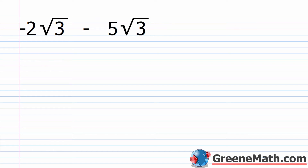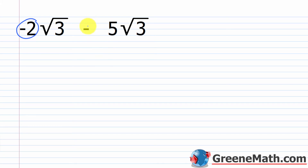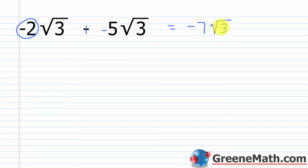What about negative 2 times the square root of 3 minus 5 times the square root of 3? I just look at negative 2 and think about negative 5 — so negative 2 plus negative 5 gives negative 7. Then the square root of 3 is just coming along for the ride. So this equals negative 7 times the square root of 3, and there's nothing I can do to simplify that any further.